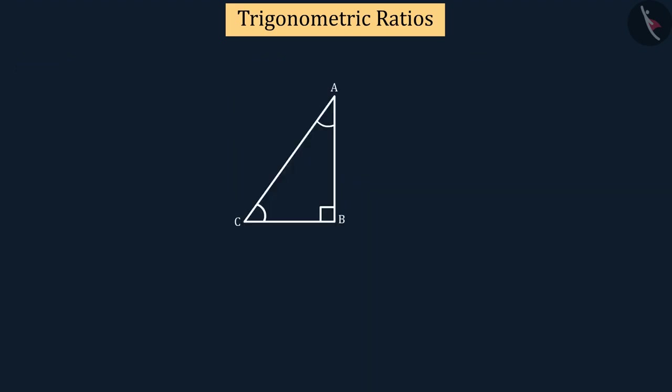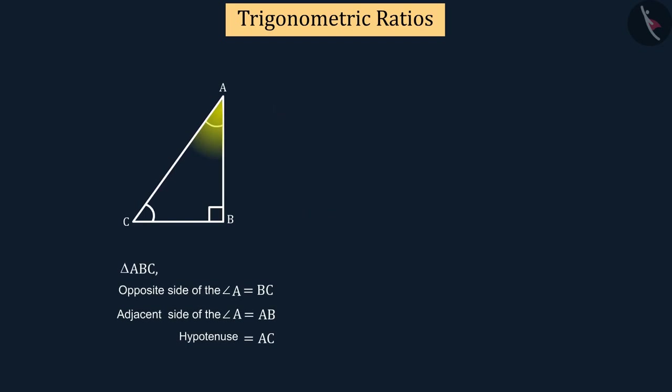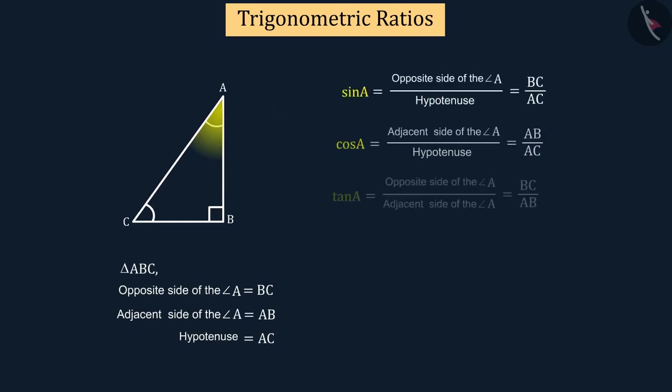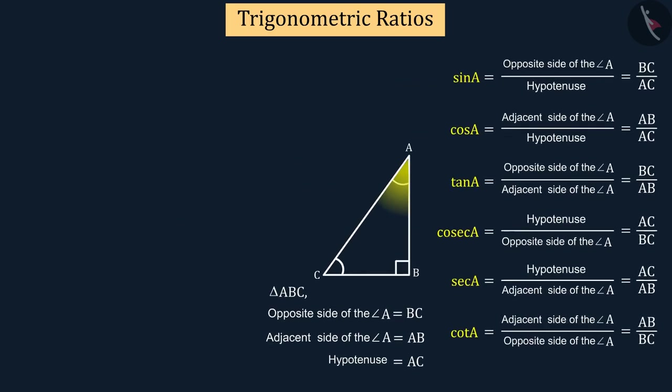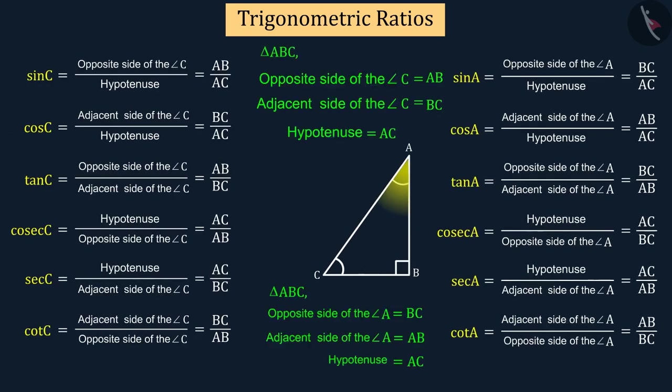Can you now write trigonometric ratios for angle A? Yes, the trigonometric ratios with respect to angle A will be as follows. You can see here that the opposite and adjacent sides change for angles A and C.